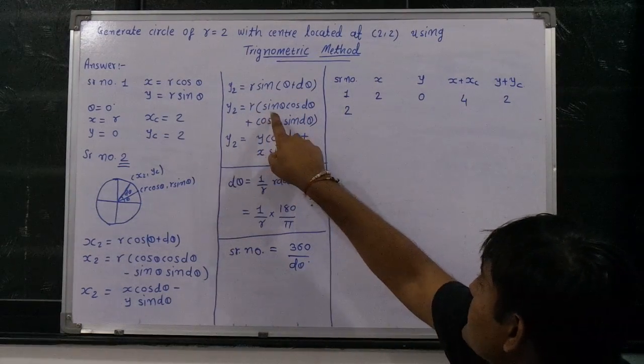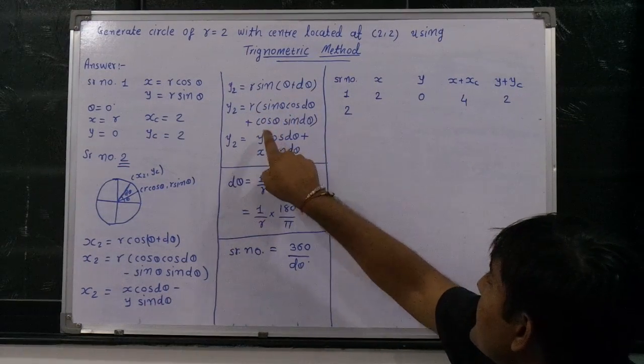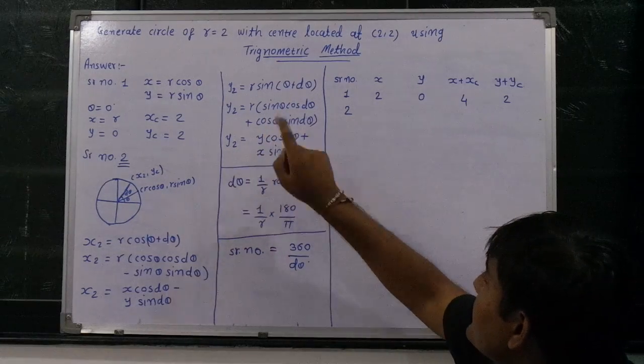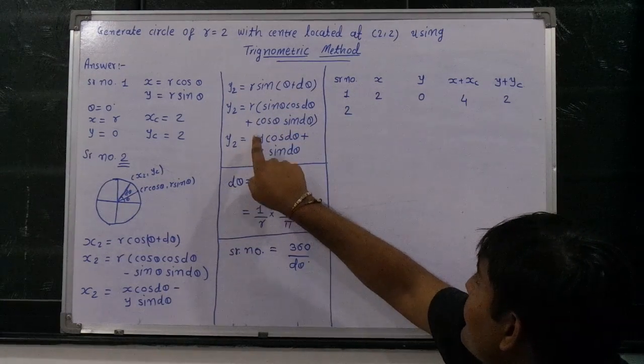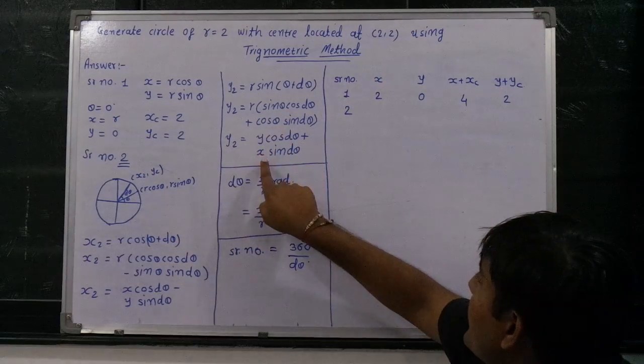In the similar manner, y2 is equal to r sin(theta plus d theta). Opening the brackets: r sin theta cos d theta plus cos theta sin d theta. Where r sin theta is y, and r cos theta is x.